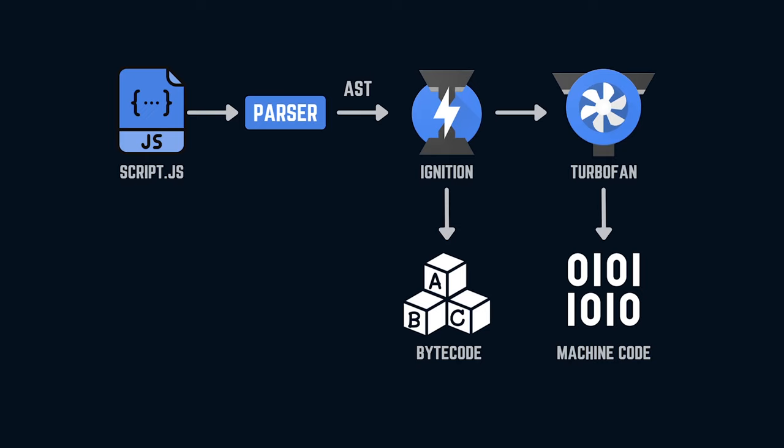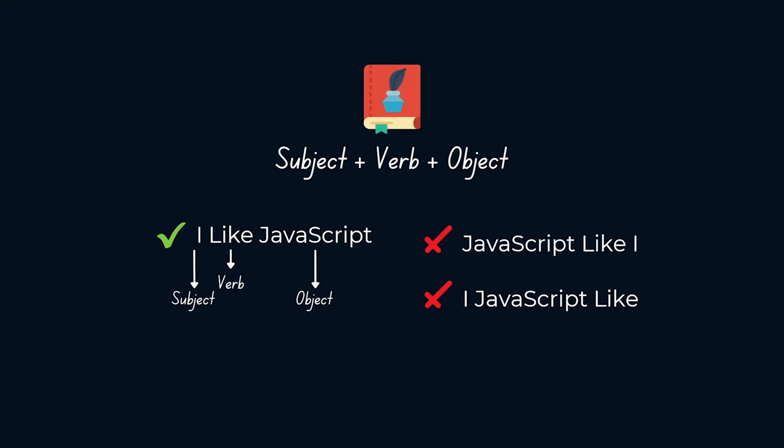The steps we follow in a programming language parser are exactly what we follow when we learn new spoken languages like English, Spanish, German, etc. Consider a sentence: we take the complete sentence and separate it into subject, verb, object, etc., then check whether the sentence is constructed according to the grammar of the language. In English, it follows subject plus verb followed by object — so it's a valid sentence.